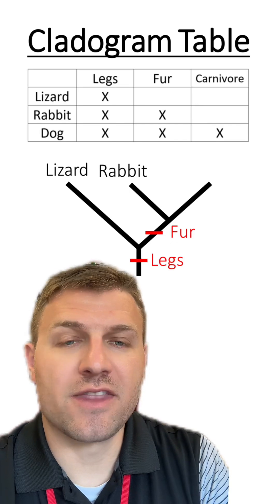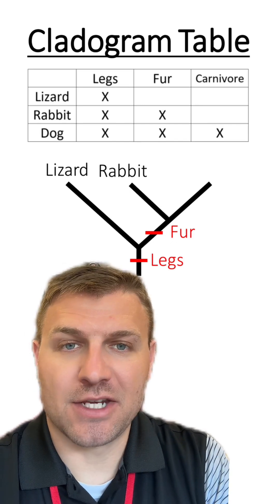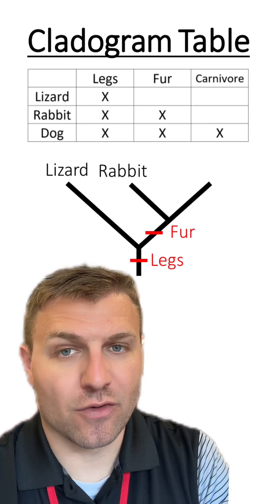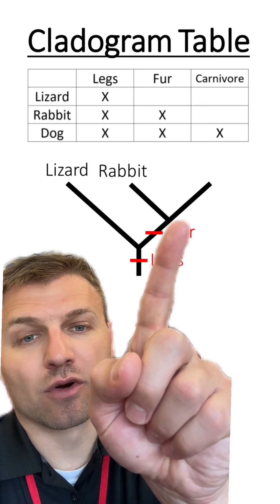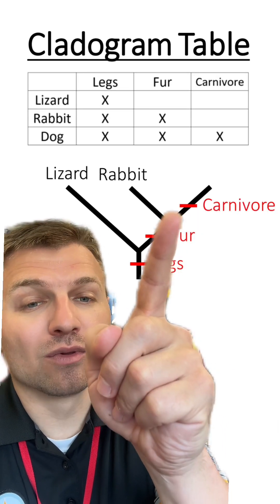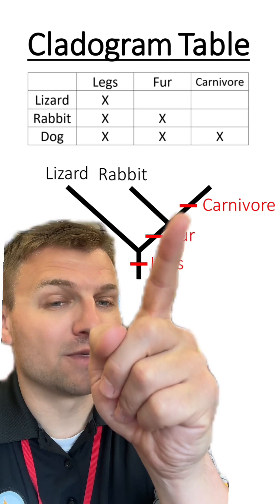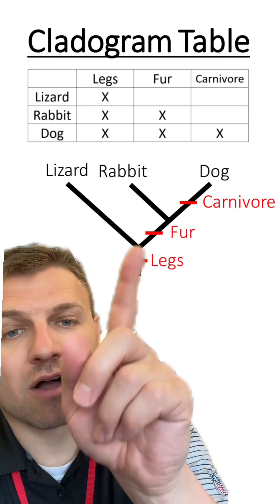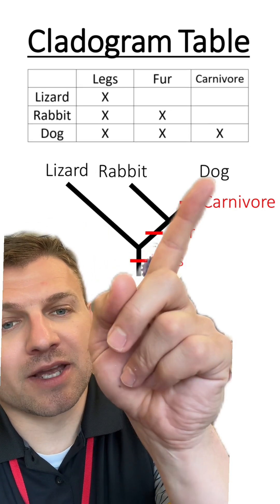Next, I'm going to look for the last adaptation to evolve, and that's being a carnivore. We're going to place the carnivore right here because the dog is the only one that's going to be a carnivore. So we place the dog all the way up here to the right.